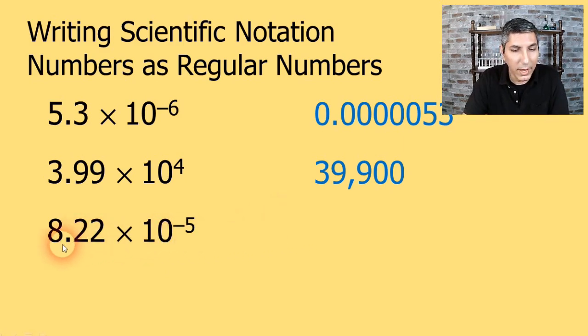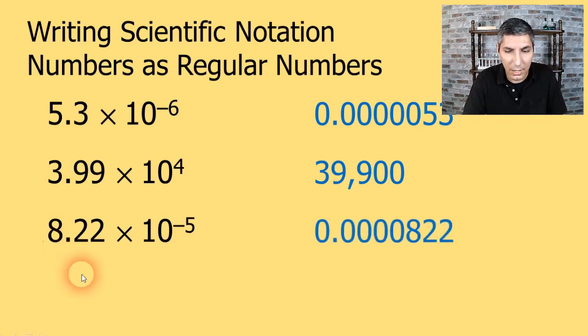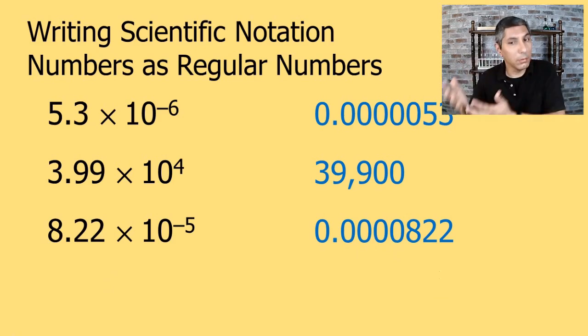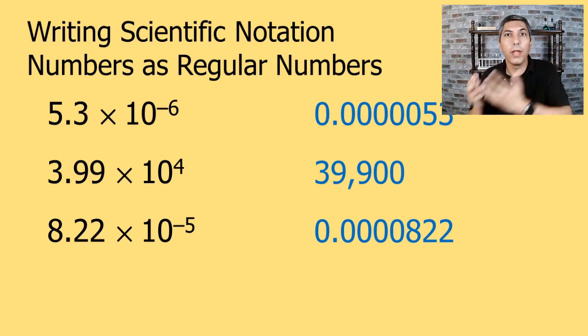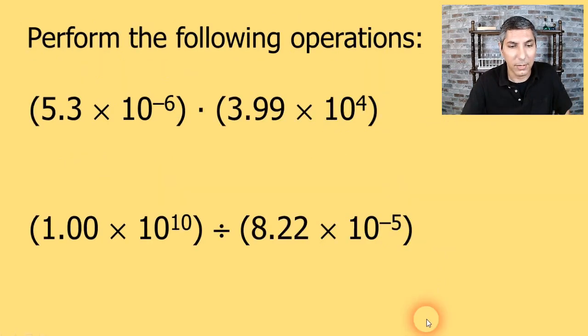How about this next one? 8.22 times 10 to the negative fifth. Well, the negative exponent implies it's a small number. So we move it over to the left to make it a small number, and then we need four more places. So we need some zeros there. So it's a decimal point, and then four zeros, 822. So hopefully you can write regular numbers as scientific notation numbers, and you can also write scientific notation numbers as regular numbers.